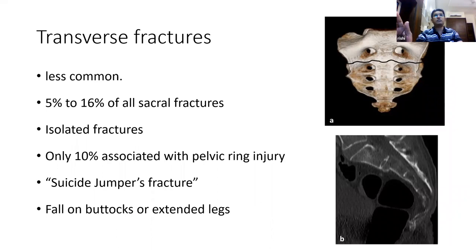Sacral fractures managed according to principles of pelvic ring injury management. Whereas transverse fractures are very uncommon injuries — only 10 to 15% of all sacral fractures are transverse sacral fractures. They are usually isolated fractures, not typically co-existent with pelvic ring injury, and are typically called the 'suicide jumper's fracture.' They usually happen following a fall — a direct fall onto the buttock region or onto extended legs.